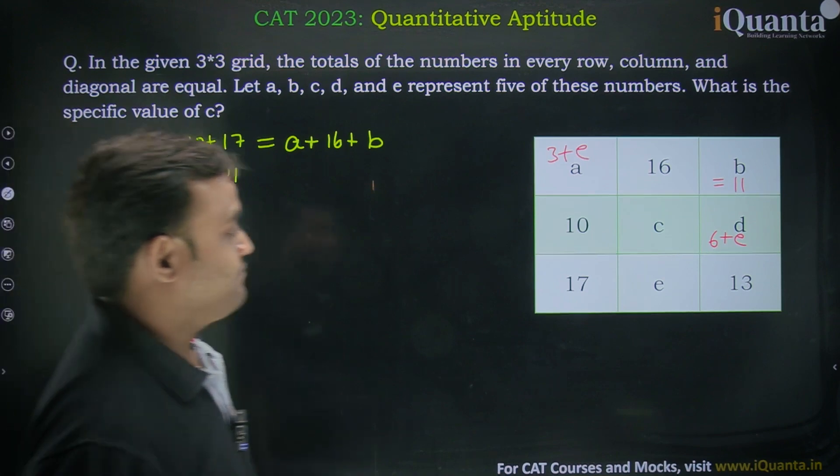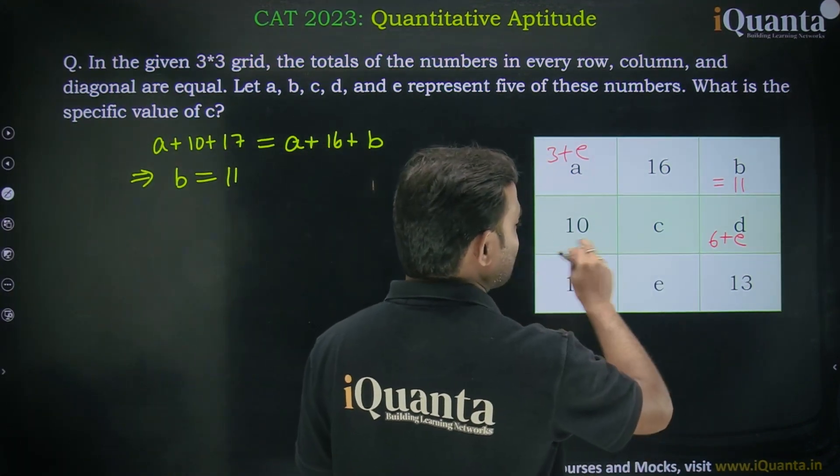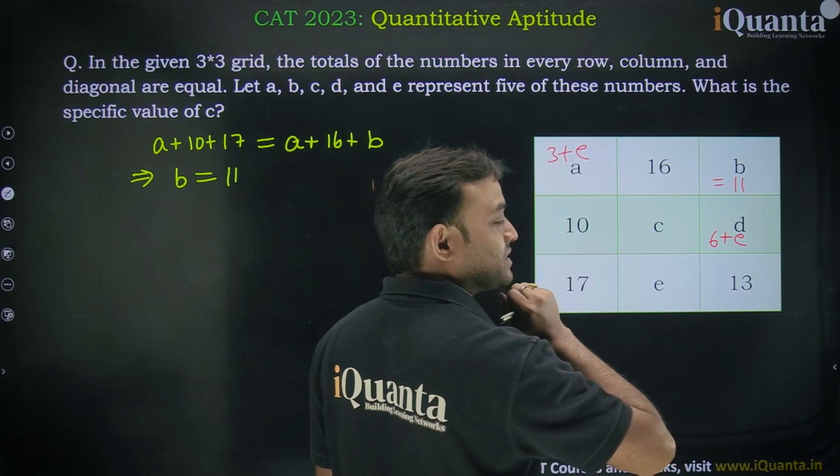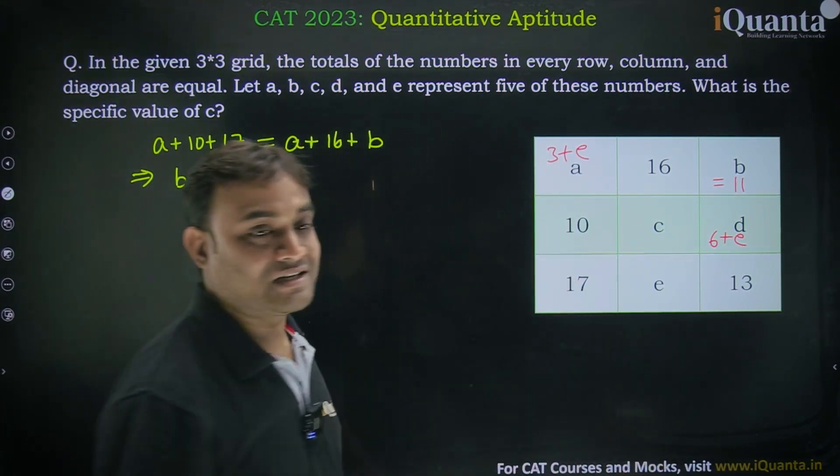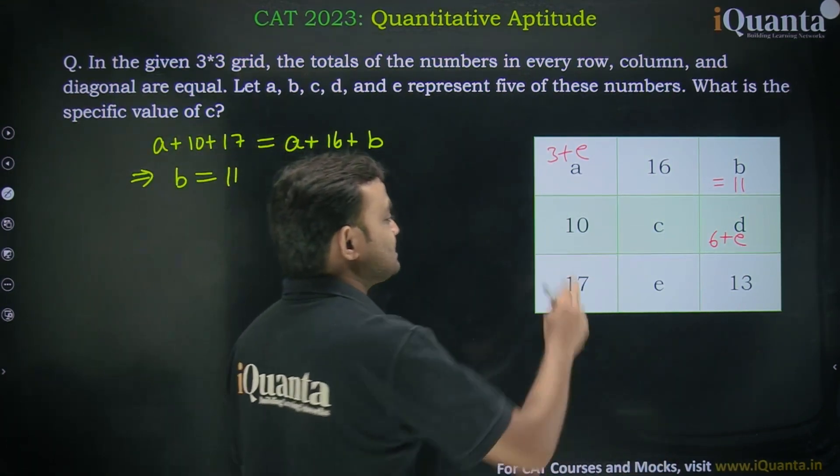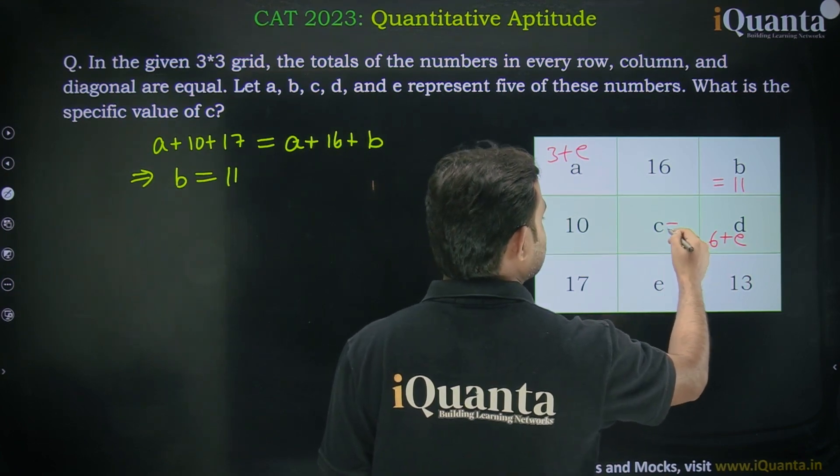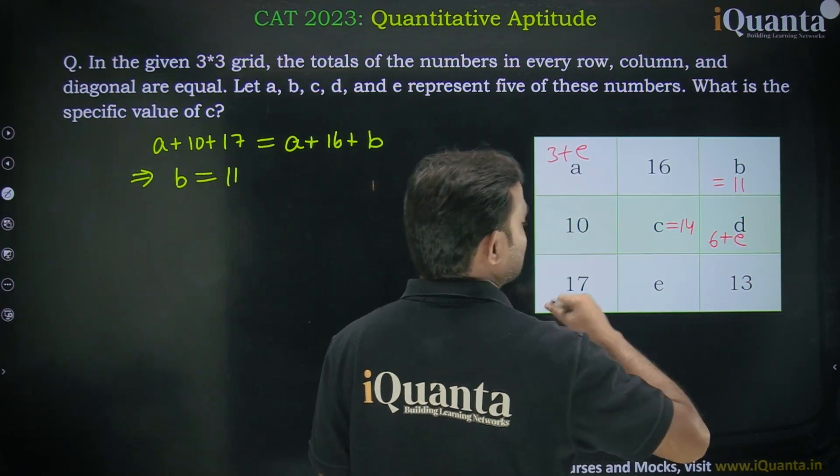We need to find c. We know that sum of all the numbers in a row or column is 30 + e. This is 16 + e, so we can say that c = 14.